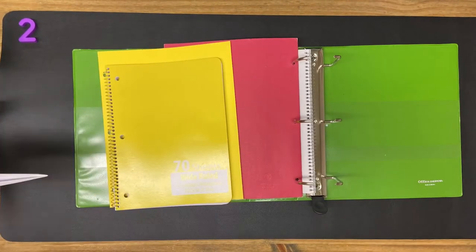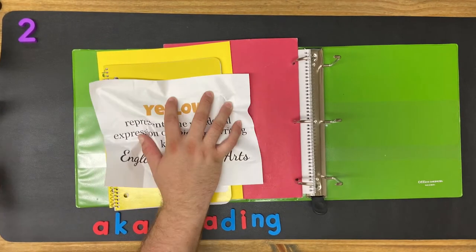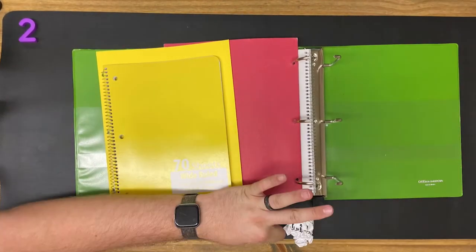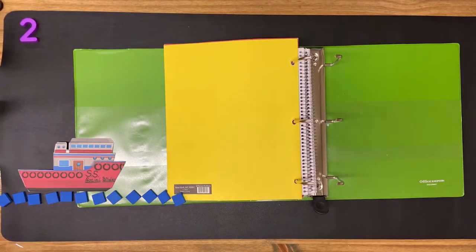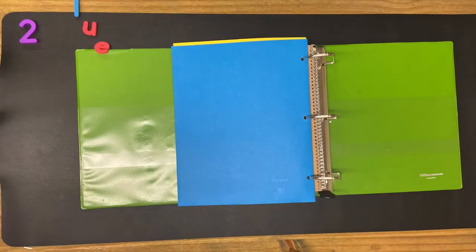yellow is ELA or reading, blue is social studies, and green is science.